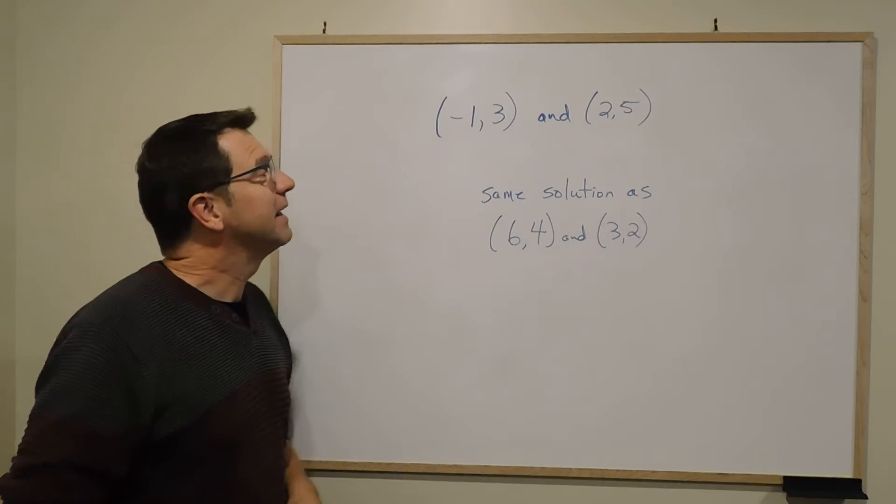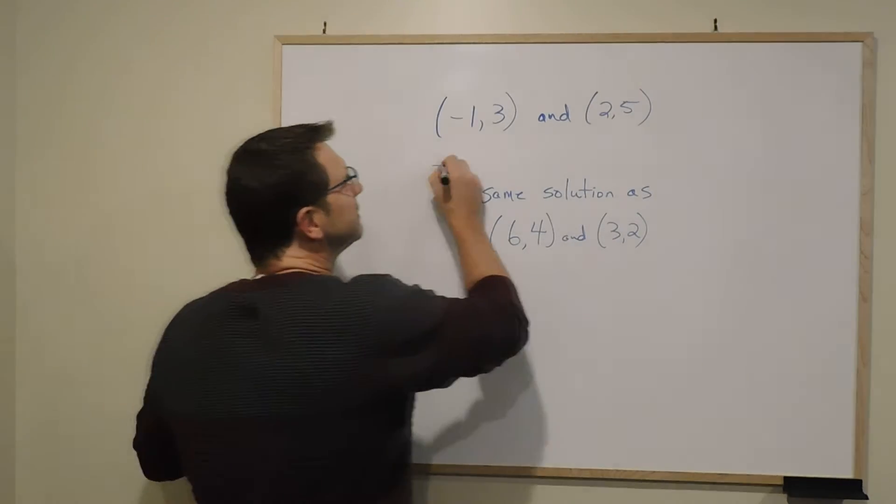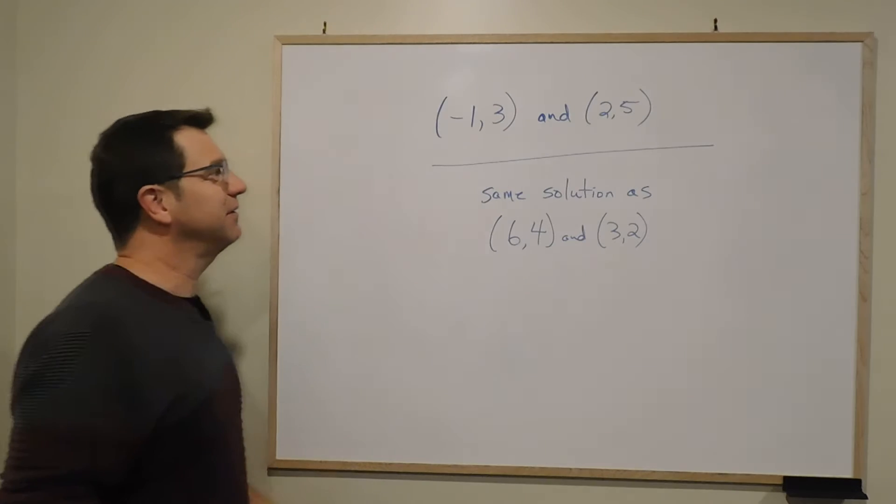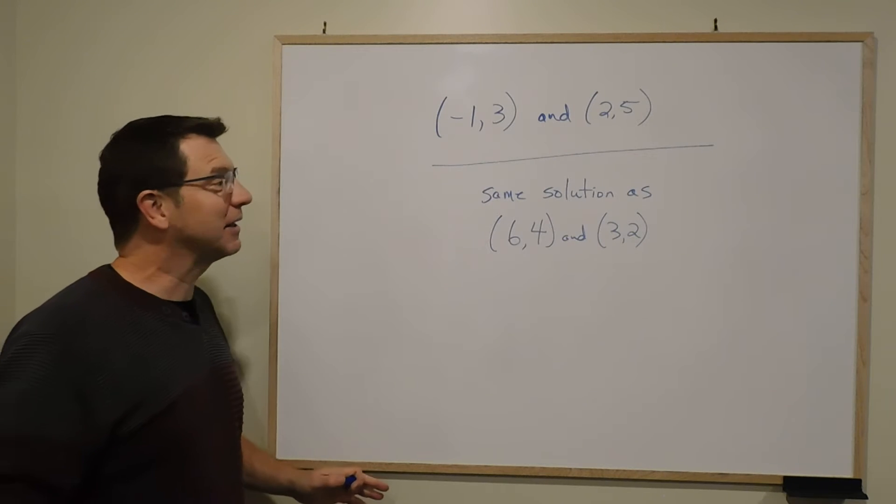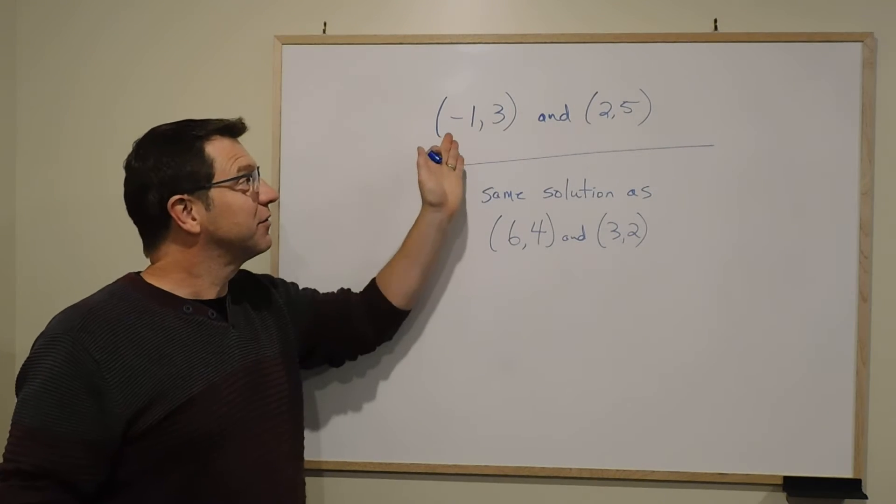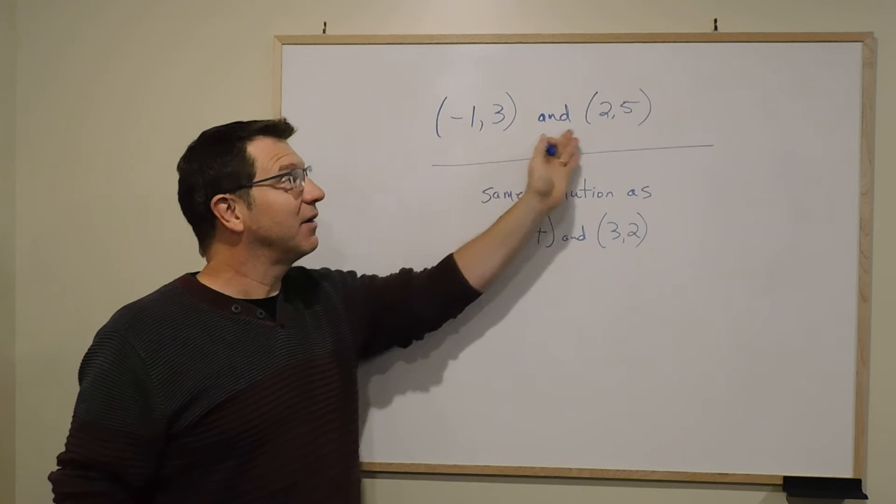But when we do this one, it wants us to find an equation, and remember an equation y equals mx plus b, of a line that goes through negative 1, 3, and 2, 5.